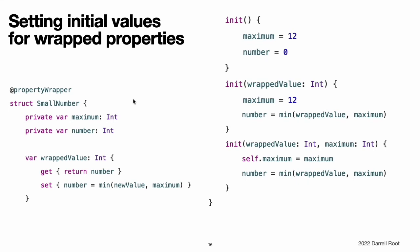To support setting an initial value or other customization, the property wrapper needs to add an initializer. Here is an expanded version of TwelveOrLess called SmallNumber that defines initializers that set the wrapped and maximum value. This definition of SmallNumber includes three initializers: init, init(wrappedValue:), and init(wrappedValue:maximum:), which the examples below use to set the wrapped value and the maximum value. For information about initialization and initializer syntax, see initialization.